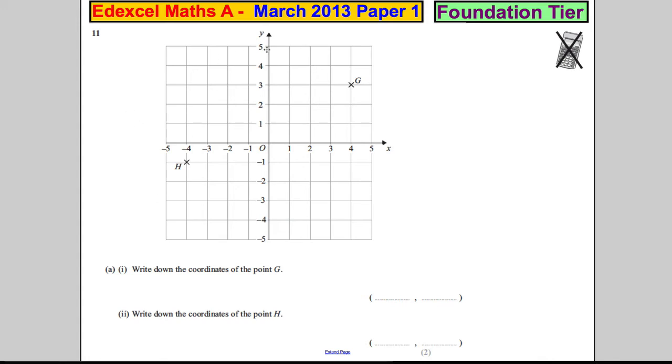Question 11. We've got a pair of axes, XY axes. Write down the coordinates of point G.